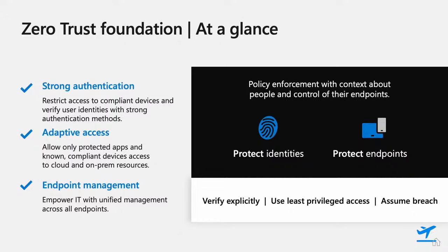Next, we think about adaptive access, which for us aligns closely with conditional access through the Microsoft Entra team. Conditional access allows you to define a rich set of compliance policies and rules. When a user goes to access a resource, you can check that access request in real time, requiring things like multi-factor authentication, device compliance, device management status, and different requirements based on whether access comes from inside or outside the network boundary. You can also pivot rules based on the resource — different rules for Outlook Web Access versus a sensitive internal line-of-business application.